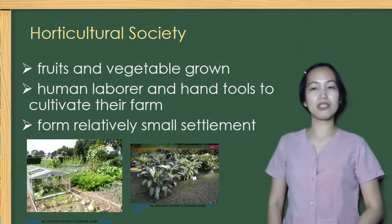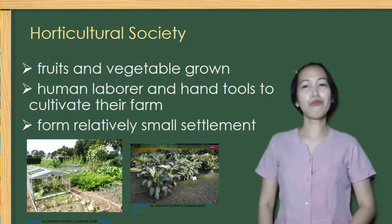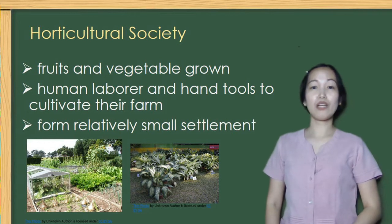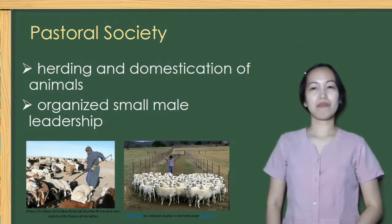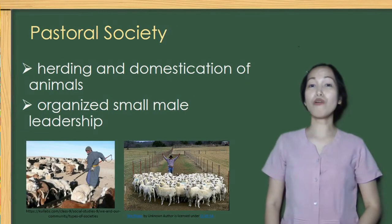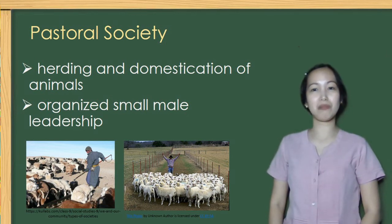Second is horticultural society. Their main form of food production is fruits and vegetables grown in the farm or garden, and they formed relatively small settlements. Third is pastoral society, where the focus was on herding and domesticating animals. They also organized small male leadership structures.